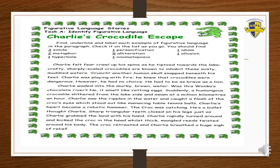Now, students, as you can see, this is worksheet number one, and there is Task A over here, which says that you have to identify the figurative language. As you can see, there is a text on 'Charlie's Crocodile Escape.' I will give you a few minutes to go through this and then we will do the following questions. I hope everyone has finished reading this text. Now we will see the question, which says: find, underline, and label each example of figurative language in the paragraph. Check it on the list as you go.